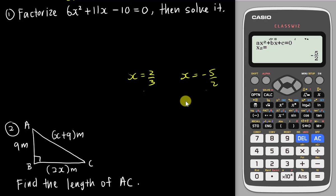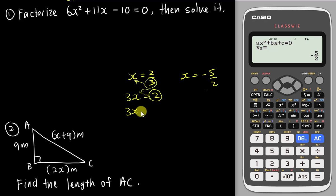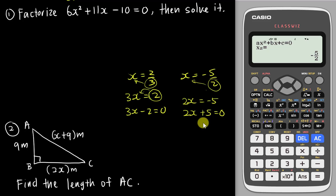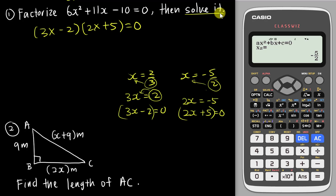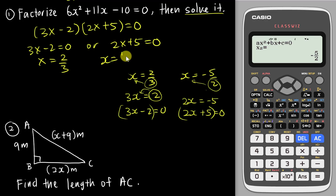So what you need to do is work step by step. For x equals 2 over 3, move the divide-3 to the other side to get multiply 3, then move the 2 to give 3x minus 2 equals 0. Similarly for x equals negative 5 over 2, move divide-2 to get multiply 2, then move negative 5 to give 2x plus 5 equals 0. So the factorized form is (3x minus 2)(2x plus 5) equals 0, giving x equals 2 over 3 or x equals negative 5 over 2, and you get full marks.